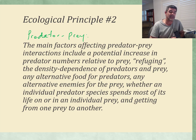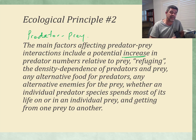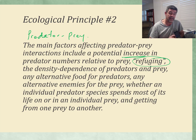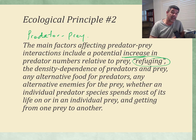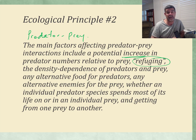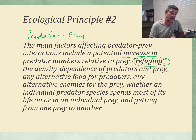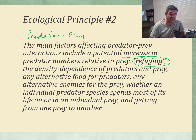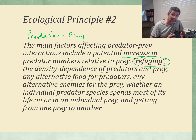The main factors that affect predator-prey interactions include a potential increase in predator numbers relative to prey, refuging — finding places that are safe — density dependence of predators and prey, any alternative food for predators, alternative enemies for the prey, whether an individual predator species spends most of its life on an individual prey, and the problem of getting from one prey to another.